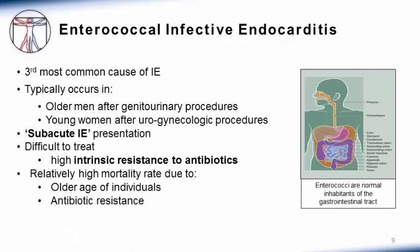Streptococcal infective endocarditis is associated with a lower rate of complications and death than staph aureus infective endocarditis. Enterococci are the third most common cause of infective endocarditis. Enterococcal infective endocarditis typically occurs in older men after genitourinary procedures and in young women after urogynecologic procedures. It has a subacute presentation and is difficult to treat because enterococci have high intrinsic resistance to antibiotics. It carries a relatively high mortality rate due to the older age of patients and the high rate of antibiotic resistance.